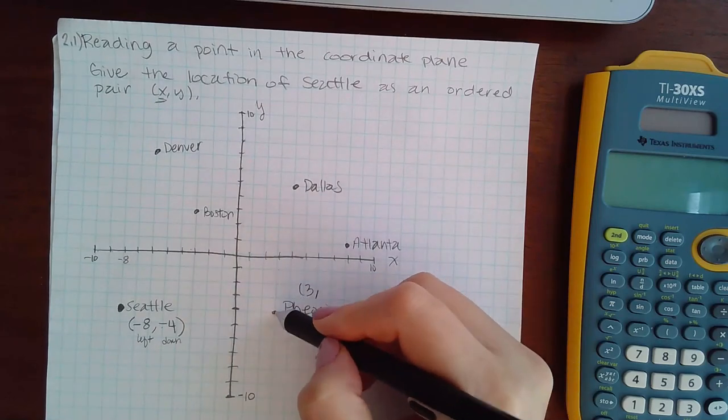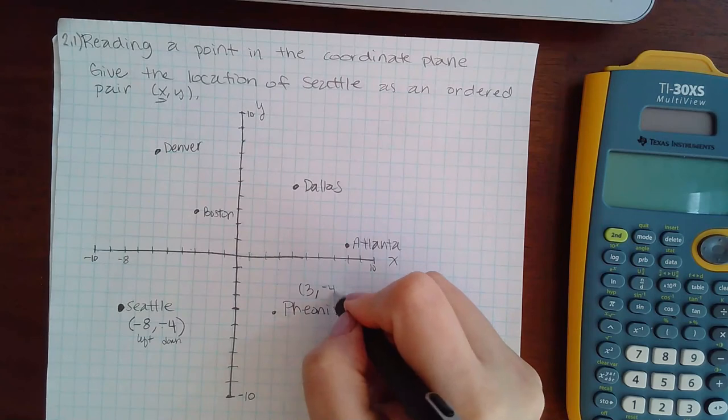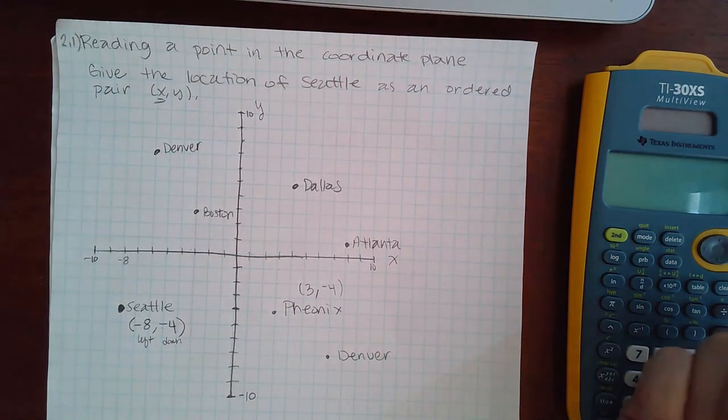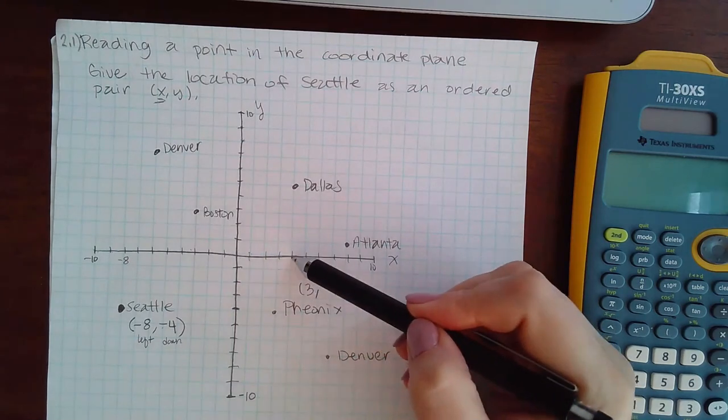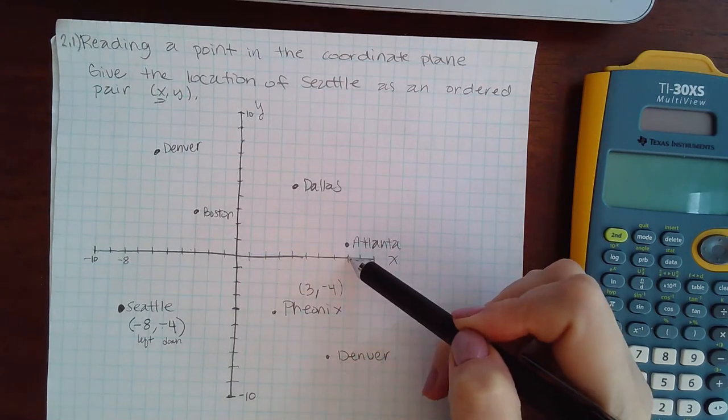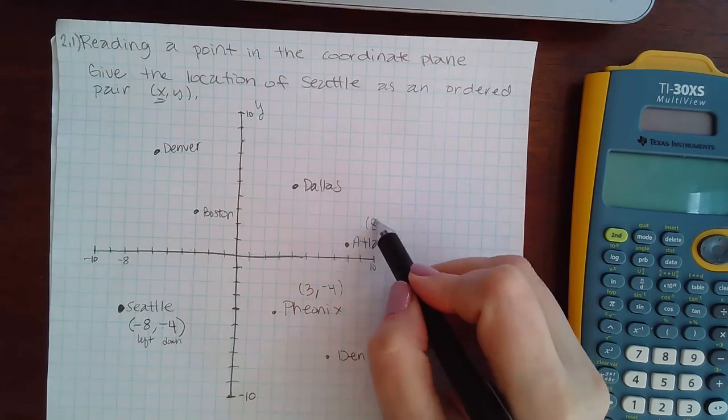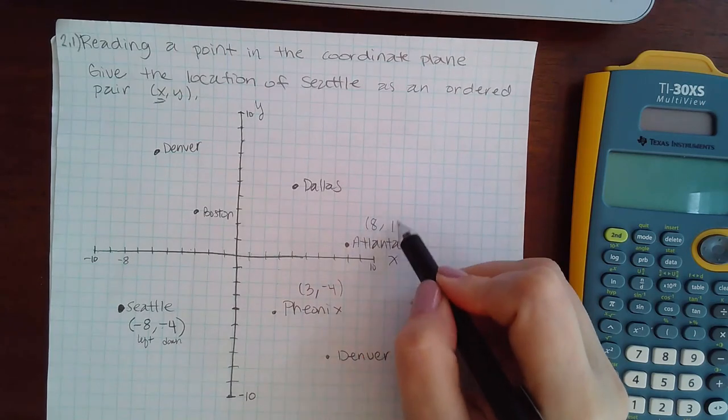If they asked you for the coordinates of Atlanta, it would mean 1, 2, 3, 4, 5, 6, 7, 8 to the right, but then up one, so a positive one for the y.